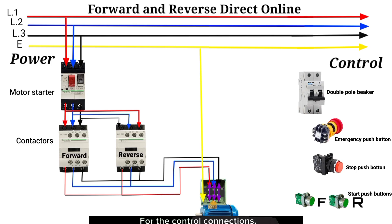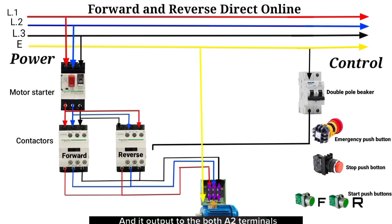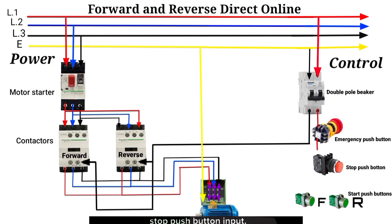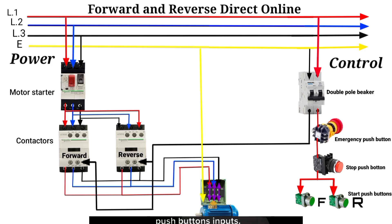For the control connections: neutral to the pole's breaker, and its output to both A2 terminals of the forward and reverse contactors. Live to the pole's breaker, and its output to the emergency push button input. Emergency push button output connects to the stop push button input. The stop push button output is then split to both the forward and reverse start push button inputs.